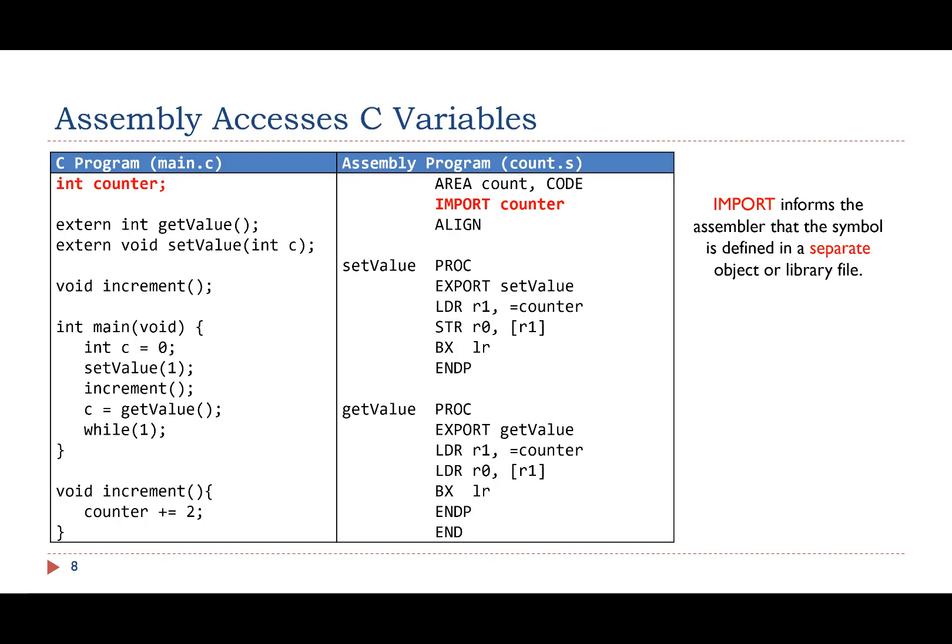Here is another example. It shows how an assembly program accesses a variable defined in C. The variable name counter is a symbol. The assembly code must use import to inform the assembler that the symbol counter is defined in a separate file.